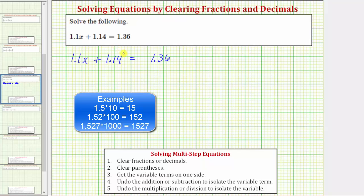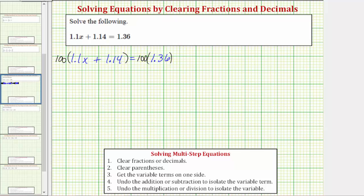So for the first step, let's multiply both sides of the equation by 100. Let's show each product. We have 100 times 1.1x plus 100 times 1.14 equals 100 times 1.36.